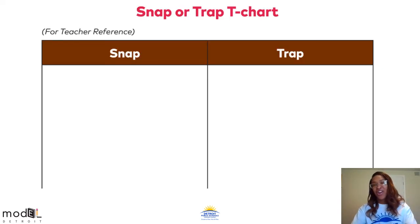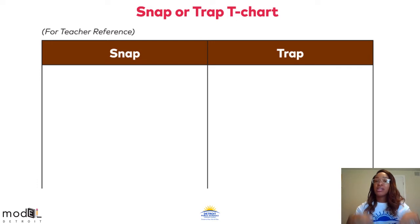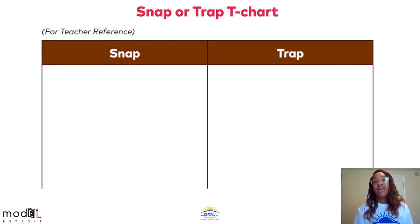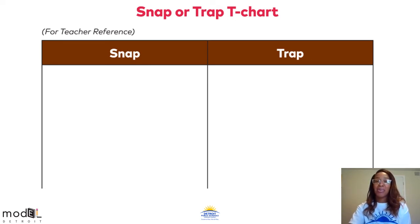All right, superstars, you know the drill. Using the words found on page 144 of your distance learning packet, go ahead and complete the snap or trap T-chart. You're going to record all of the words that are snap in the snap column, meaning they play fair or they sound exactly how they're spelled. And the words that are a trap in the trap column, meaning they don't play fair and they're not always spelled exactly how they sound. Pause this video to write and fill in your snap or trap T-chart. I'll see you back here in just a moment.